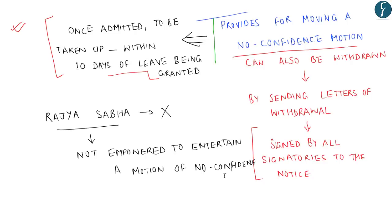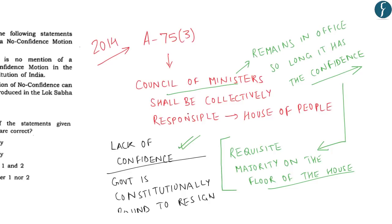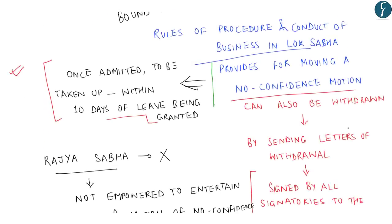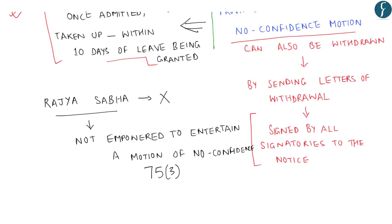Another important thing to remember is that Rajya Sabha is not empowered to entertain a motion of no confidence, because under Article 75 clause 3, the council of ministers shall be collectively responsible to the house of the people and not to the council of states, that is Rajya Sabha.